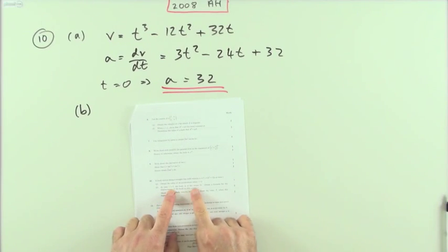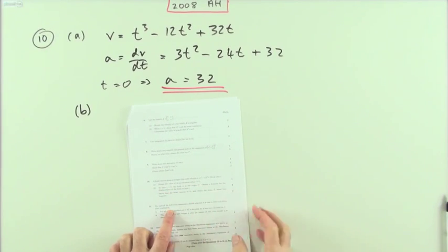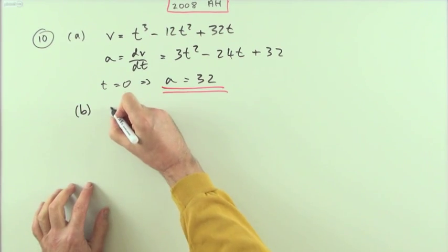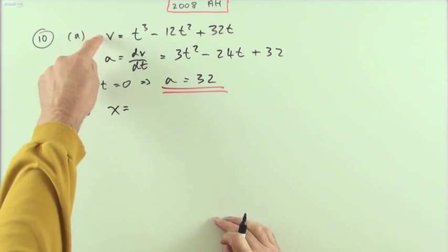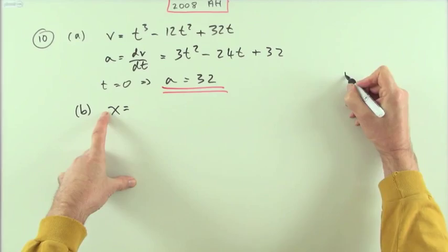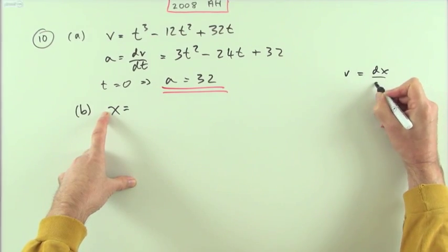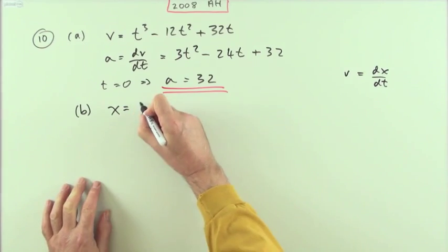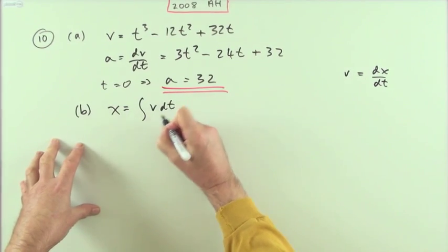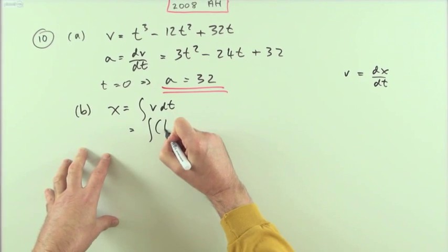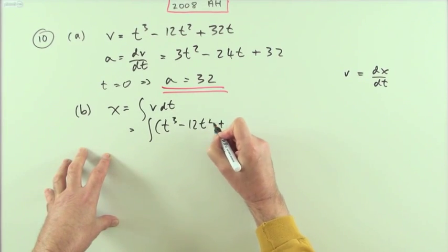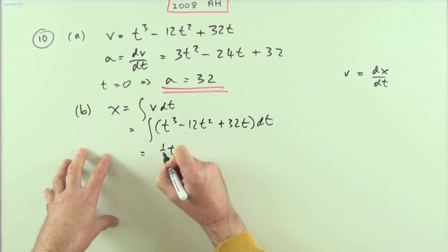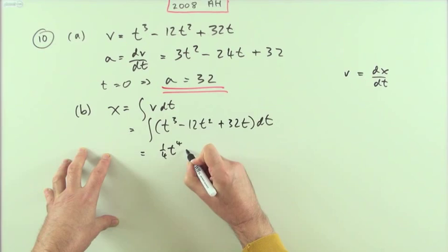The second part: at time t the body is at the origin — obtain a formula for the displacement at time t. To get the displacement x, velocity is the rate of change of x: v equals dx/dt. So to go backwards we need to integrate. x is going to be the integral of v dt, which is the integral of t cubed minus 12t squared plus 32t dt.